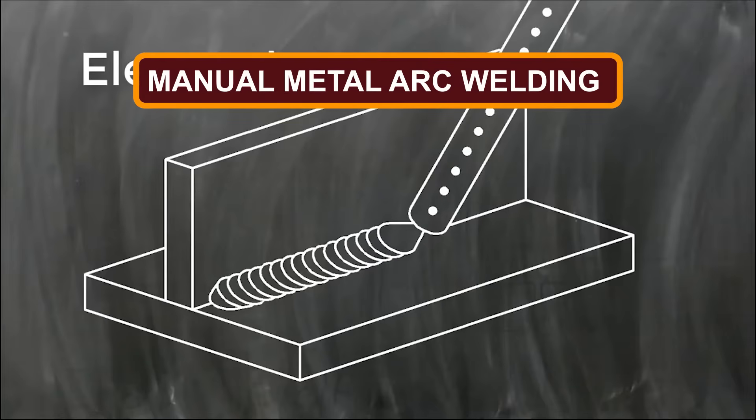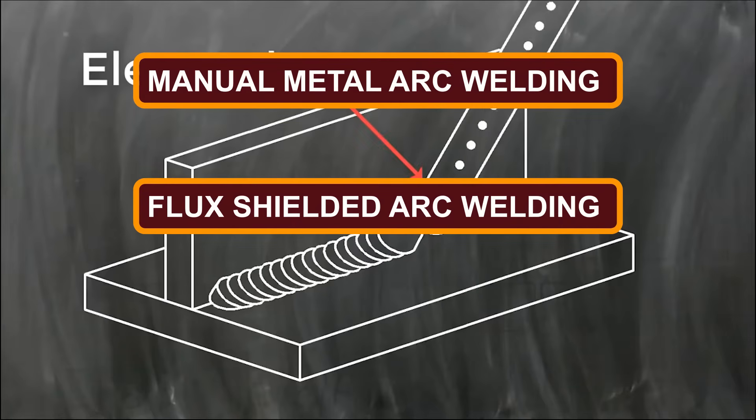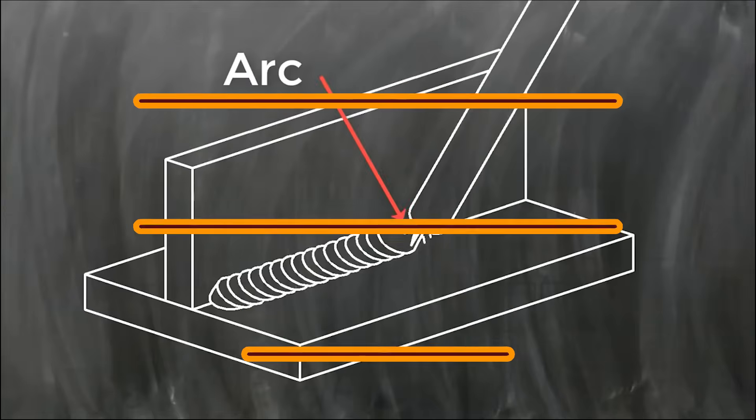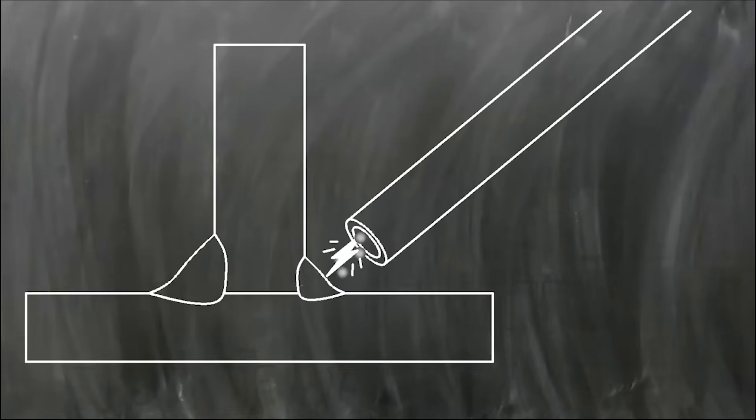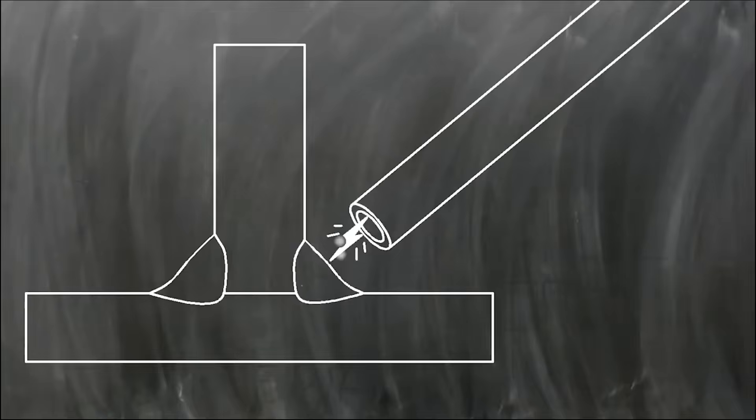Shielded Metal Arc Welding, also known as manual metal arc welding, flux shielded arc welding, or stick welding, is a process where the arc is struck between the metal rod and the workpiece. Both the rod and workpiece surface melt to form a weld pool.